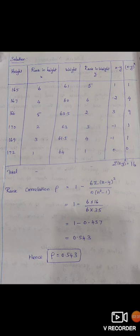The fourth column, you put the rank in weight. 64 is the first rank, 63.5 is the second rank, 63 is the third rank, 61.5 is the fourth rank, 61 is the fifth rank, and 60 is the sixth rank.